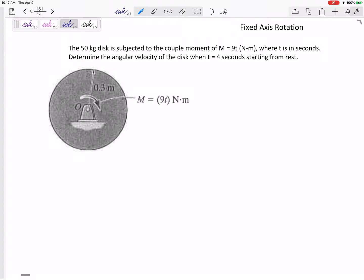Let's look at this one. A 50 kilogram disc is subjected to the couple moment of M = 9t N·m, where t is in seconds. Determine the angular velocity of the disc when t equals four seconds starting from rest.